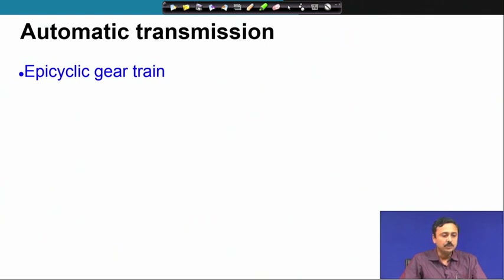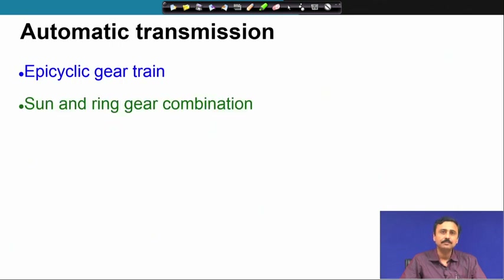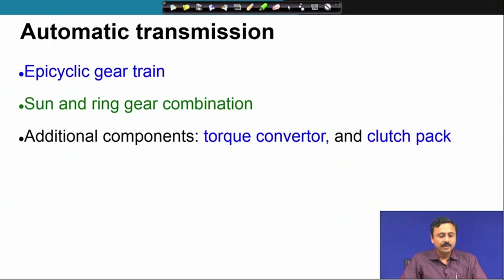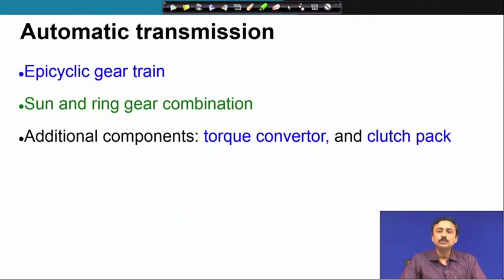Next, we are going to discuss the automatic transmission — the automatic gearbox. An automatic gearbox uses an epicyclic gear train, which has both sun and ring gear combination as discussed before. There are additional components: the torque converter and the clutch pack, though we are not going to discuss them in detail.